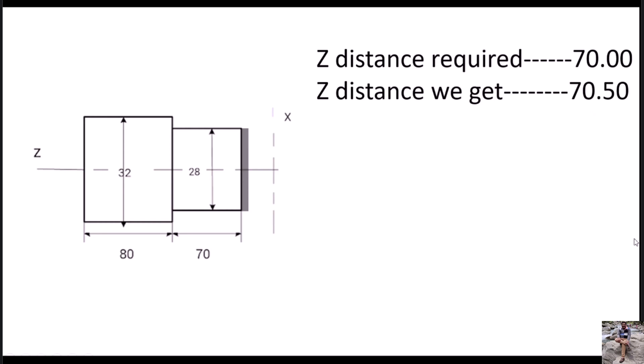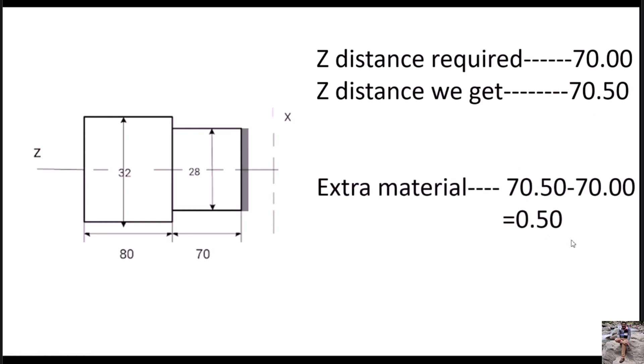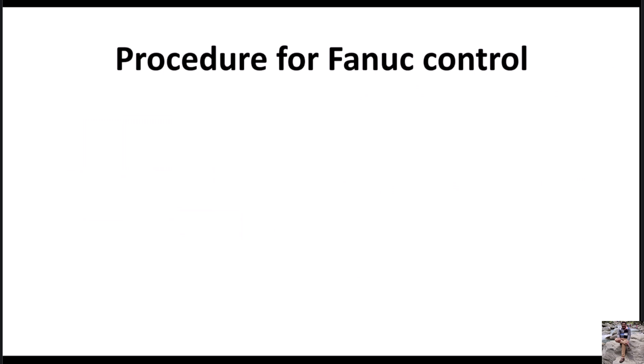Now let's see how to calculate the offset in Z if any extra material is present in Z. Here the length we want is 70mm and the length we get is 70.50mm, so the extra material is 0.5mm. Since this is a length value, we will give the offset in Z. In the X and Z graph, if the tool is moving to the right it is plus, and if it is moving to the left it is minus. Here our tool is moving to the left, so it is minus — therefore we give the offset in Z as minus 0.5.